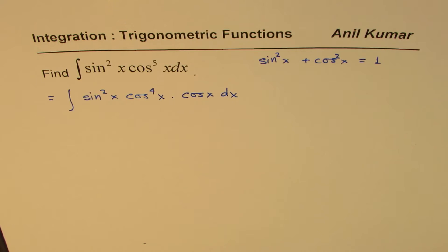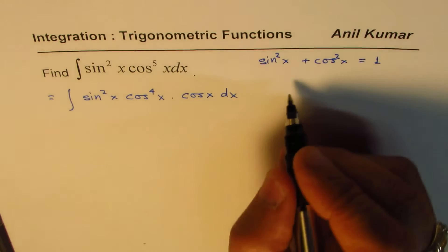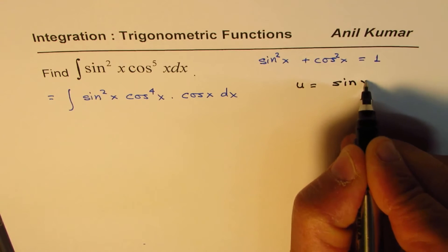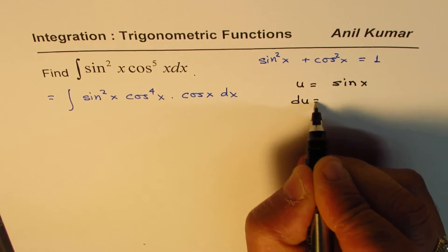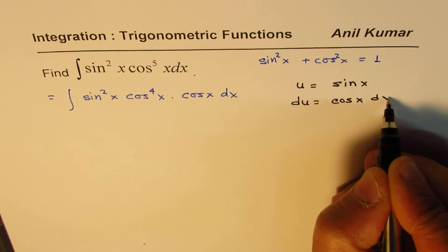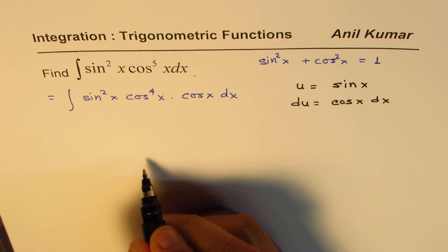which we want to convert to du. So that means we could make a substitution of u equals to sine x. So if I write u is sine x, then du will be equals to cos x dx. So that will take care of this part.